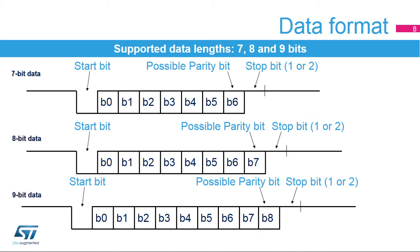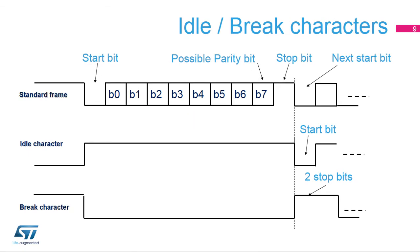This signals the start of a frame and is used for synchronization. The data length can be 9, 8, or 7 bits with the parity bit counted. Finally, one or two stop bits, where the line is driven high, indicate the end of the frame. An idle character is interpreted as an entire frame of ones, including the number of stop bits. A break character is interpreted as receiving all zeros for a frame period; at the end of the break frame, two stop bits are inserted.